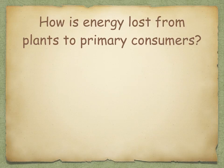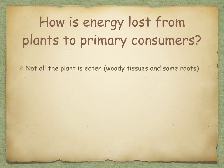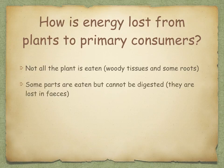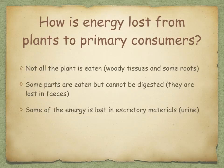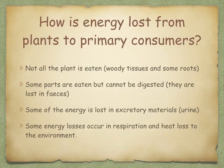Losses also occur between plants and primary consumers, and only about 10% of the net primary production of plants is used by herbivores for growth. This low percentage results from not all the plant being eaten — for example, woody tissues and roots may not be eaten. Some parts of the plant are eaten but cannot be digested, so they're lost in feces. Some energy is lost in excretory materials such as urine, and some energy losses occur in respiration and heat loss to the environment.